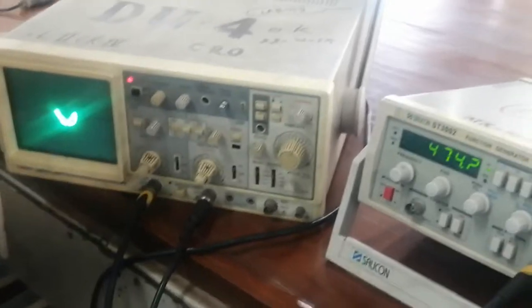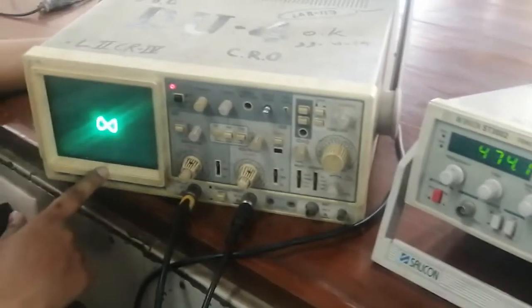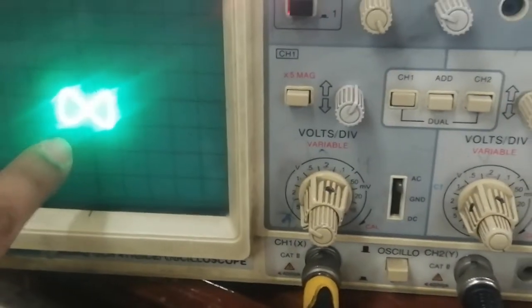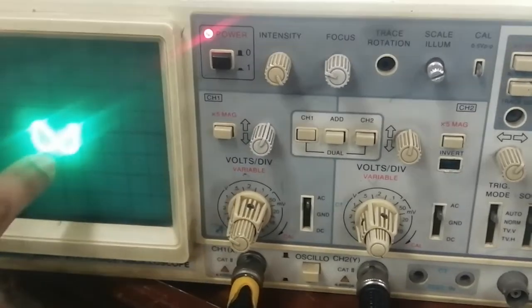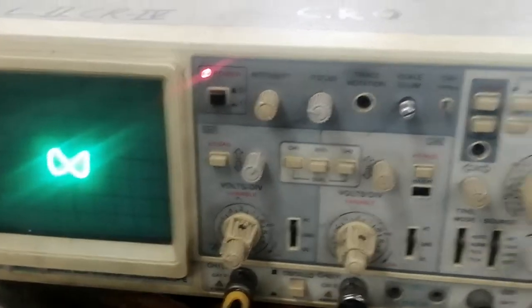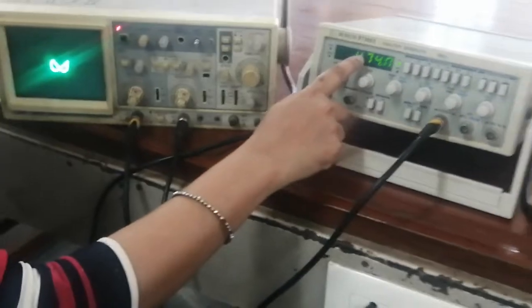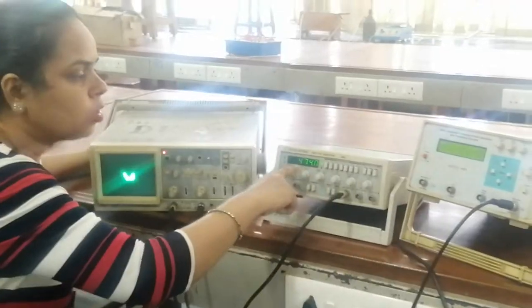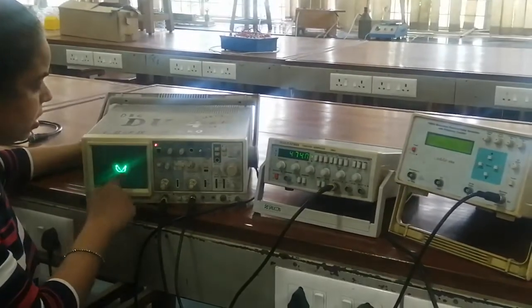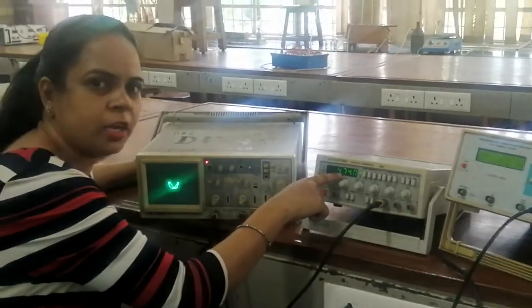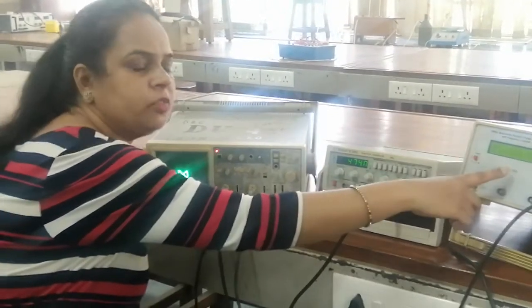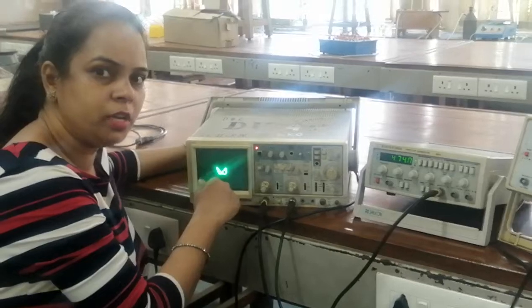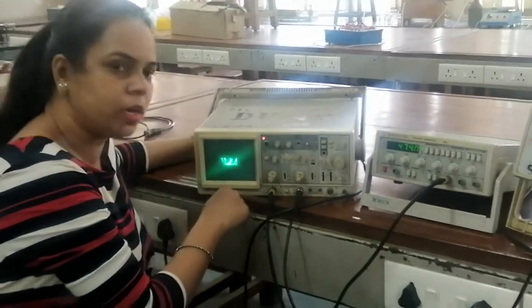When the two frequencies are coming from the function generators, the fx and fy components are acting simultaneously in the CRO. What do we observe? We observe a figure-8 type Lissajous figure. Why is it a figure-8? Because the frequencies are in the ratio of 1:2. Here it is 470 and here it is 950, so the fy component is double the fx component. That is why it is a figure-8. If we reverse, if we do 1 kilohertz here and 500 hertz there, then the Lissajous figure will be in the vertical direction.